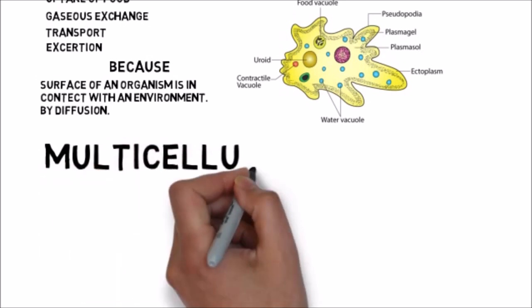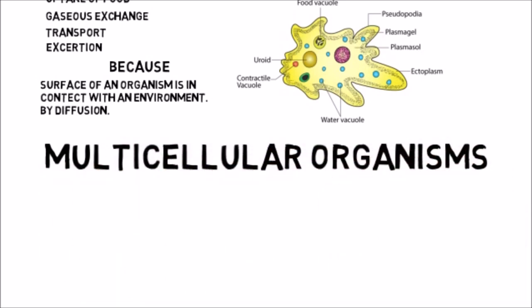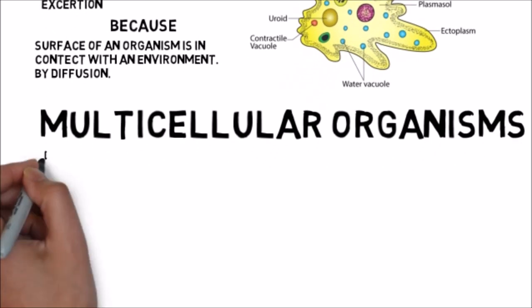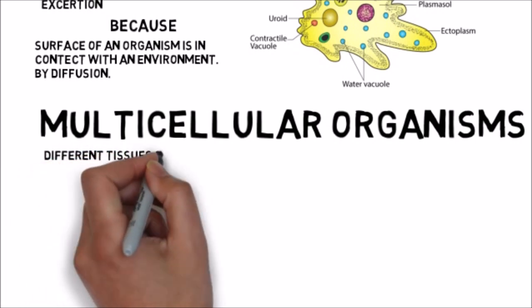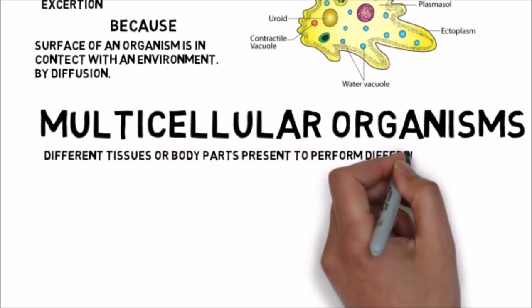But in multicellular organisms, the body structure is much more complex and huge compared to unicellular organisms, and not all cells are in contact with the environment. So in multicellular organisms, different organs or tissues are present to perform different tasks.